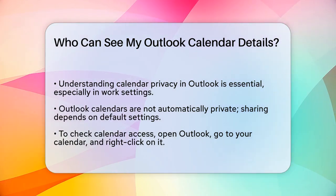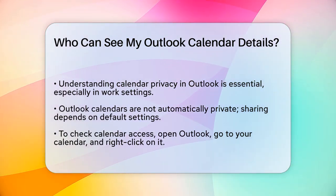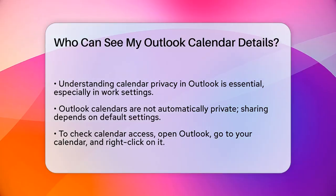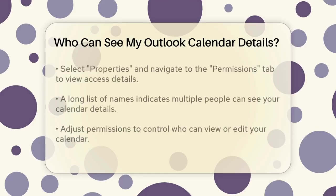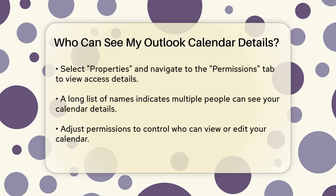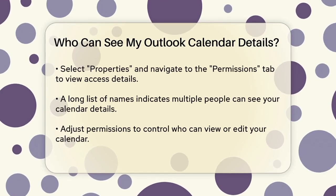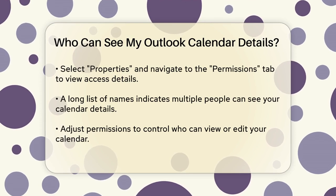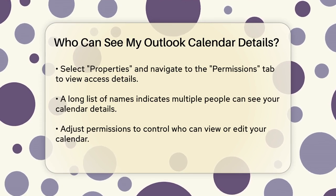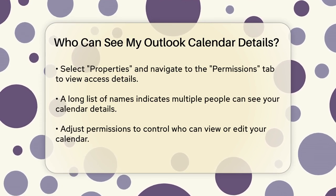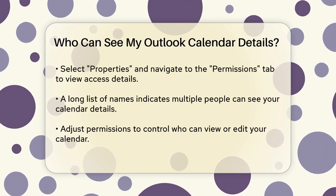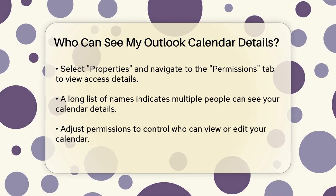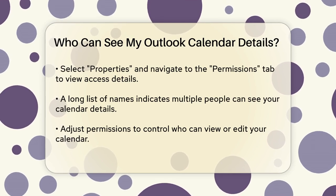Here's how you do it. Open Outlook, go to your calendar, and right-click on the specific calendar you want to check. Select Properties, and then navigate to the Permissions tab. Here, you'll see a list of people who have permission to view or edit your calendar.